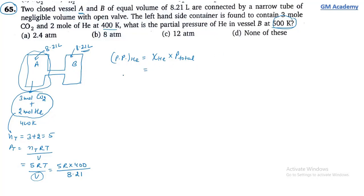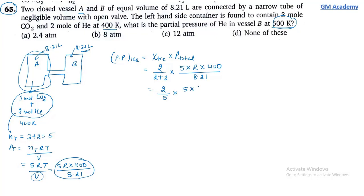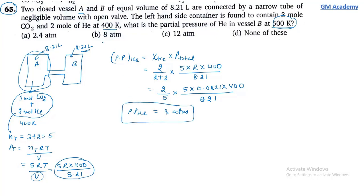Mole fraction of He = 2/5. Total pressure = 5 × 0.0821 × 400 / 8.21 = 20 ATM. So partial pressure of He = 2/5 × 20 = 8 ATM. Option B is the correct answer.